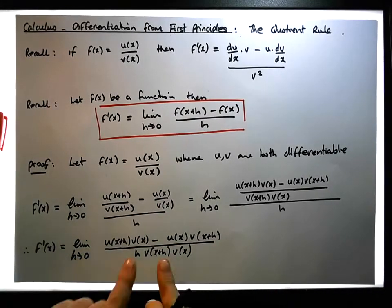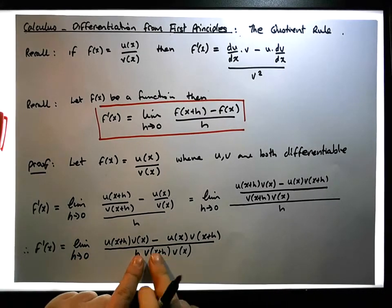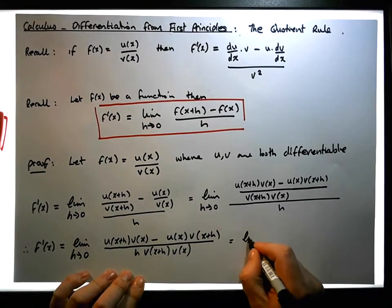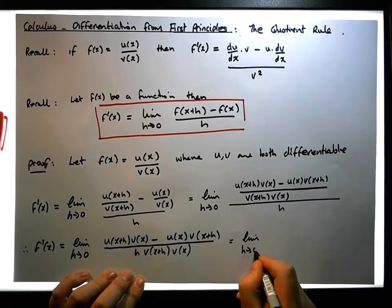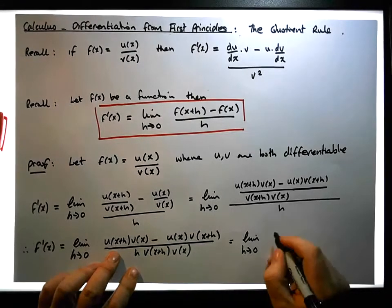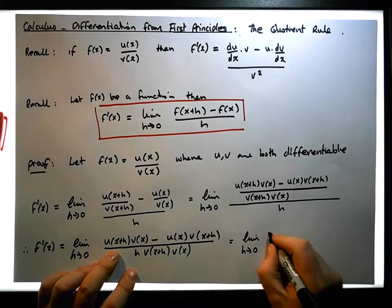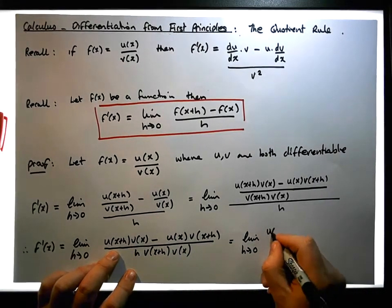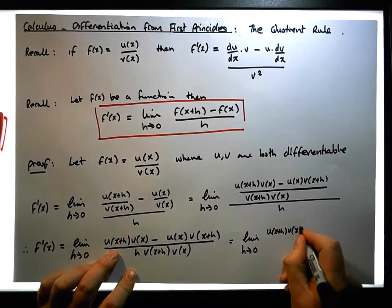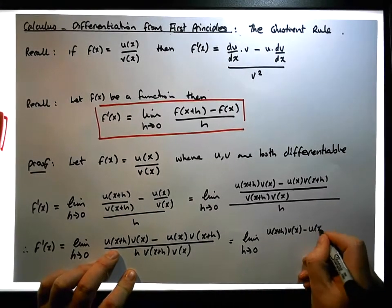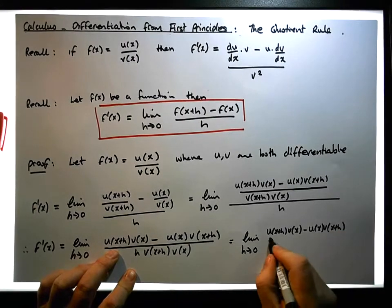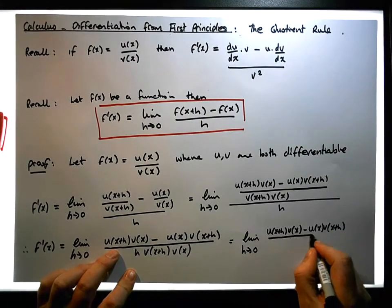Now we're going to split this up into two fractions. This becomes equal to the limit as h tends to zero of u of x plus h times v of x minus u of x times v of x plus h, all divided by...